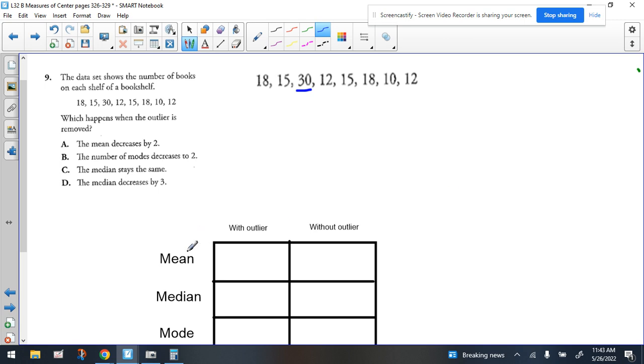We're going to go ahead and find the mean, median, and mode with the number in there, and then we'll take the number out and find the mean, median, and mode, and we'll compare and see which answer choice we'll pick. So typically what you should do whenever you have to find all three measures of center, it's a good idea to put the numbers in order from least to greatest. So let's do that first.